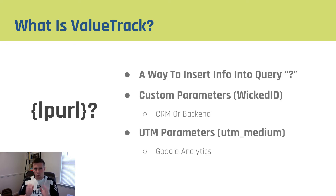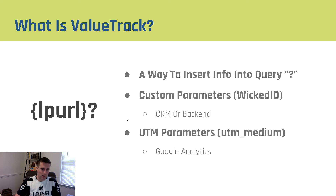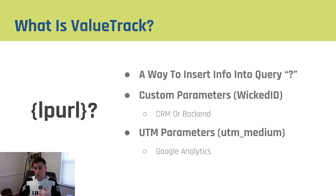So let me explain quickly what value track is. Value track is a way to dynamically insert information into the tracking query after your landing page. The LP URL — like adskills.com — is your landing page URL used inside AdWords. The query is everything that comes after the question mark. After the question mark, you can use custom parameters like Wicked ID if you use Wicked Reports — those are helpful things specific to your CRM or back end that can pull pieces of information and store them with a contact.